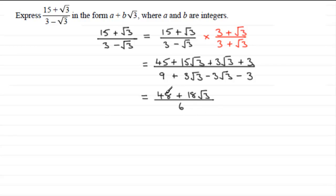6 into 48 goes 8 times and 6 into 18 goes 3 times, so you're going to end up with 8 + 3√3. Or you could just pull out 6 as a common factor on the top and then that would leave you with 8 + 3√3, and then that's all divided by 6, the 6s cancel.